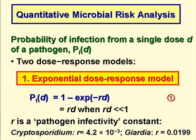We have to use a dose-response model, and the model we use for protozoan pathogens, such as Cryptosporidium and Giardia, is the exponential dose-response model, which is PID equals 1 minus e to the minus RD – we'll call this equation 1. When RD is very small, the equation becomes PID equals RD.